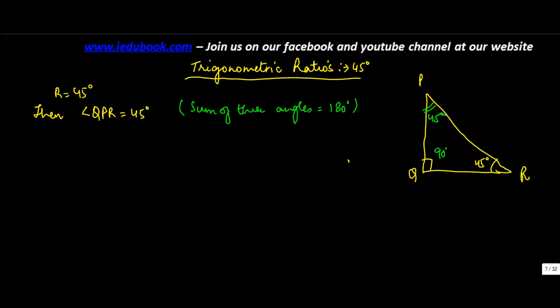Now once you've proved that this angle and this angle are equal, we know that PQ is equal to QR. Why? Because sides opposite to equal angles are equal. Let's assume that these are equal to X. So you have PQ equals to X, you have QR equals to X.